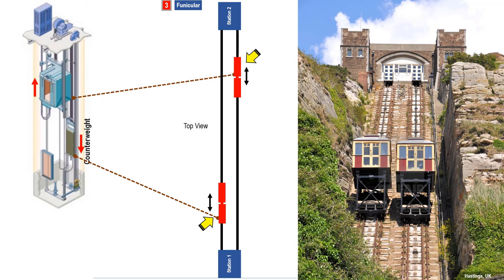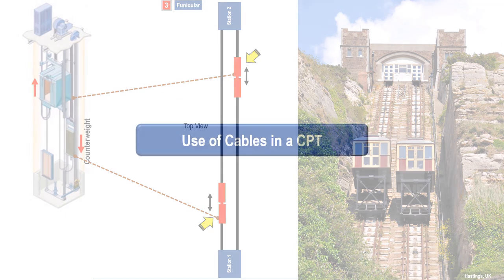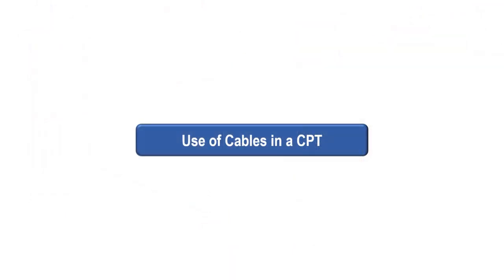In an elevator, there are a number of stops between the top floor and the ground floor. In a funicular, there are only two stops at the two end stations. Let us look at the rationale on the use of cables in a CPT.